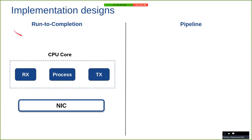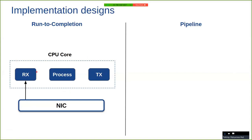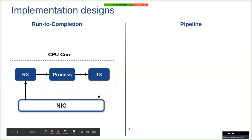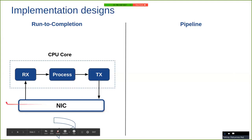What is a run-to-completion design? In this model, whenever the NIC receives a batch of packets, any one of the cores running the DPDK application receives those packets, processes those packets, and then finally sends them out via the NIC. And this cycle continues — we receive a bunch of packets, we process them, transmit them out, then we receive the next batch, process and transmit, and this goes on.